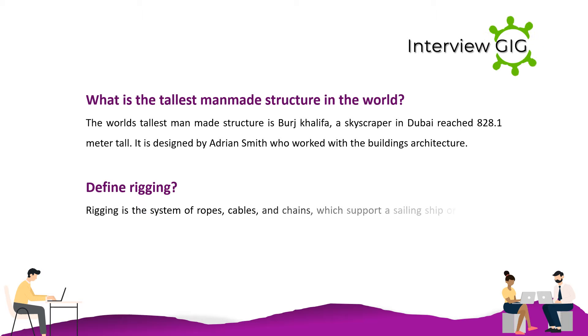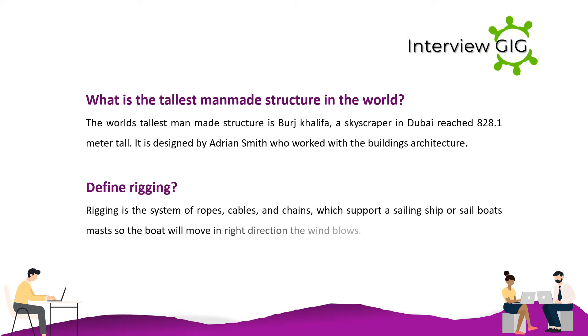Define rigging. Rigging is the system of ropes, cables and chains which support a sailing ship or sailboat's mast so the boat will move in the direction the wind blows.